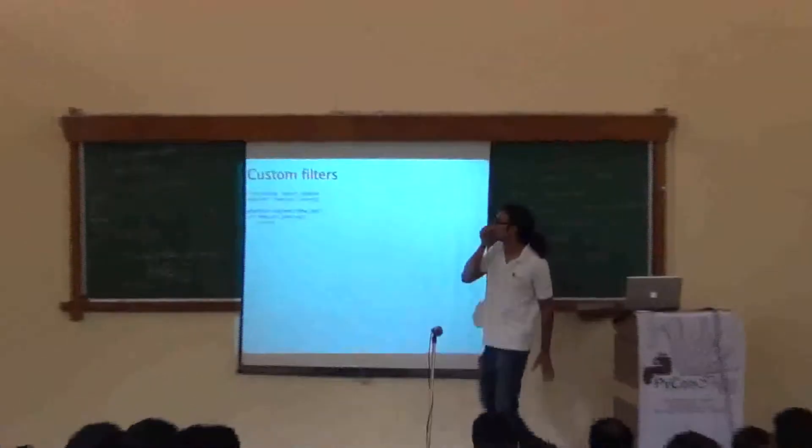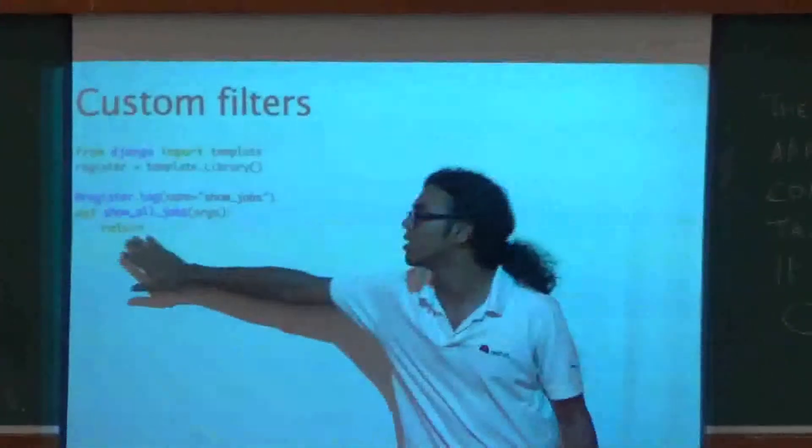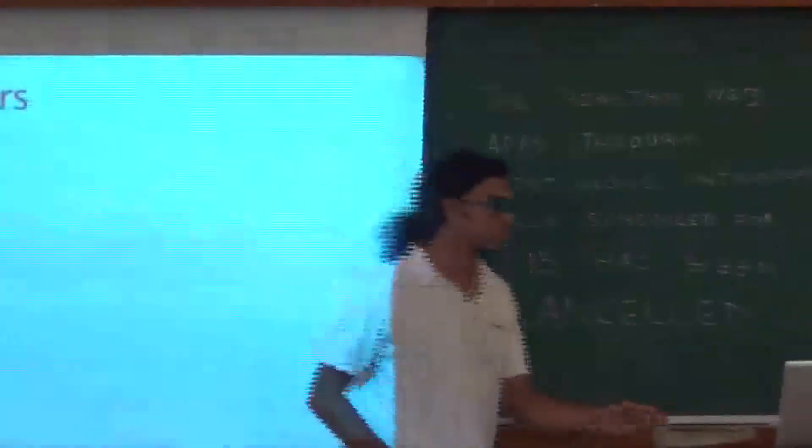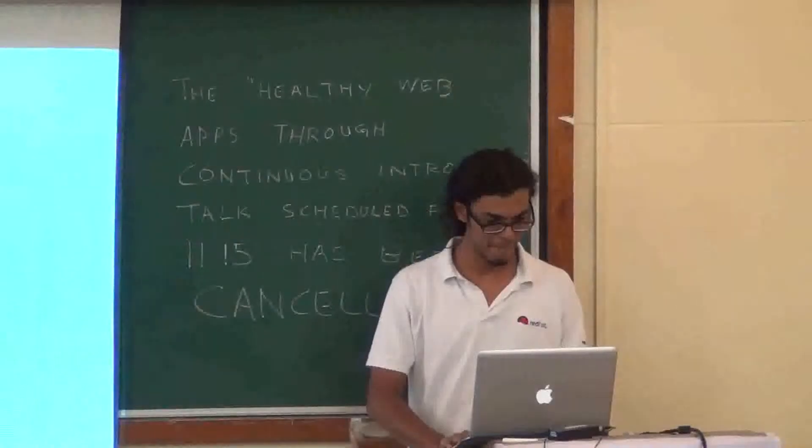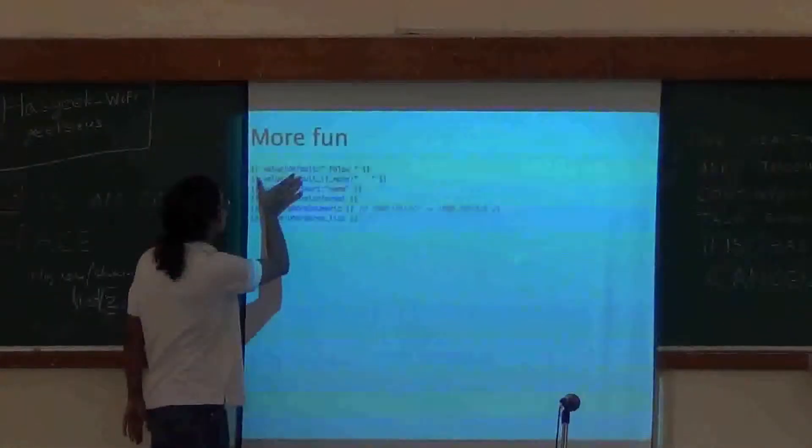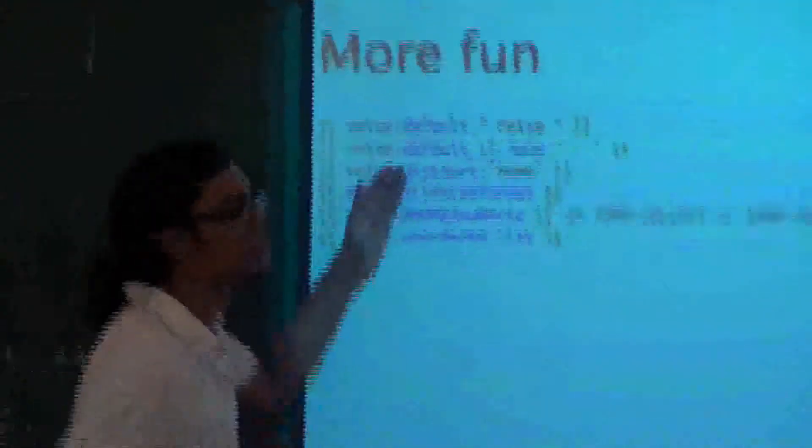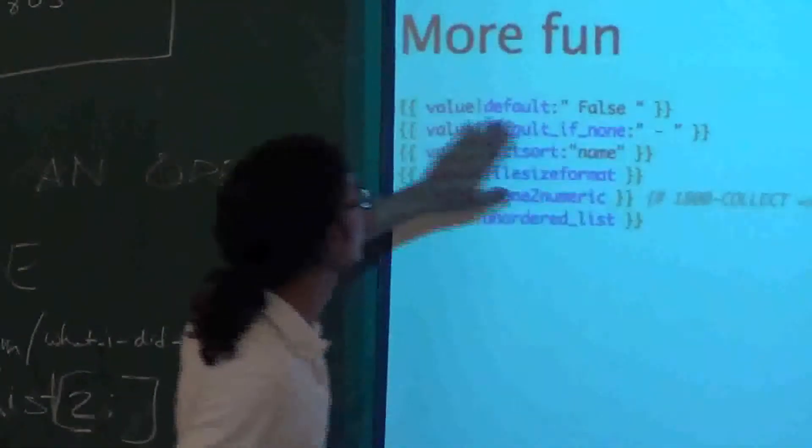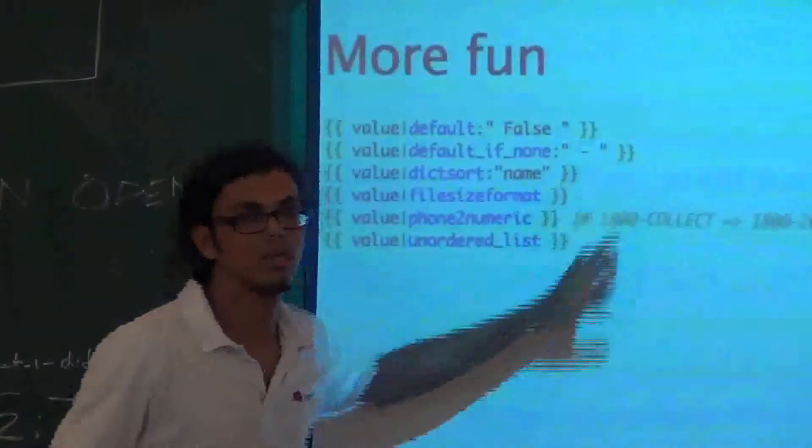Similarly, custom filters, the same way. It takes in argument and it returns stuff. So, my custom filter will be named default, and this will be the argument which it expects. And this is the first argument. And this is the second argument. And then, you do whatever you want to do with it, and then you return it. So, this is what a custom filter is.